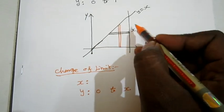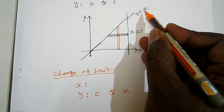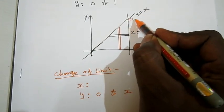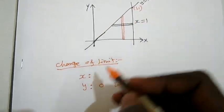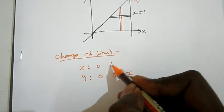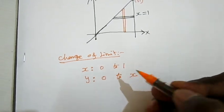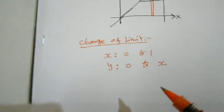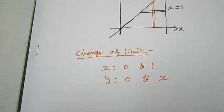From the origin to x equals 1, y equals 1, this point must be (1, 1). So the x limit is 0 to 1. Now I want to evaluate the given integral using this change of limits.